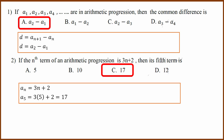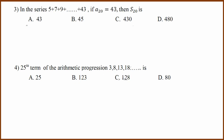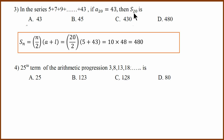Next is another arithmetic progression question. In the series, 5 is the first term and 43 is the last term. Since a20 is 43, there are 20 terms. To find the sum of 20 terms, we can use the a plus l formula. With a equals 5 and l equals 43, adding and simplifying gives 480 as the answer. Answer D.